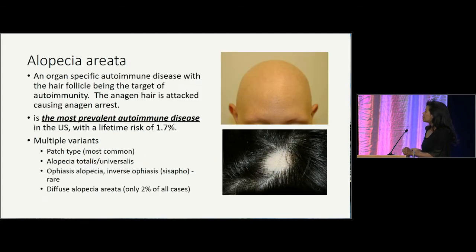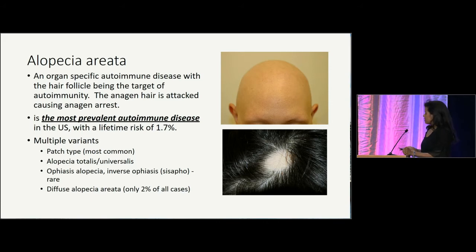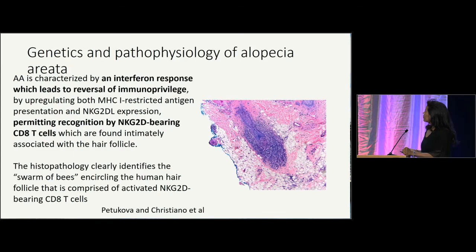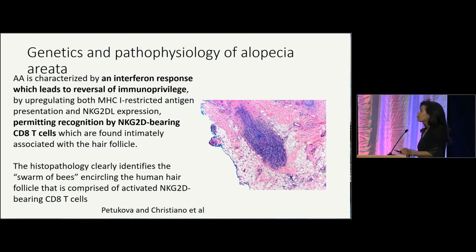Alopecia areata, as many of you know, is an organ-specific autoimmune disease targeting the hair follicle. In particular, the antigen here is a tax which causes antigen arrest. It's the most prevalent autoimmune disease in the United States, and there are multiple variants. Alopecia areata is characterized by an interferon response, which leads to reversal of immune privilege and permits recognition of the hair follicle by NKG2D-bearing CD8-positive T cells.